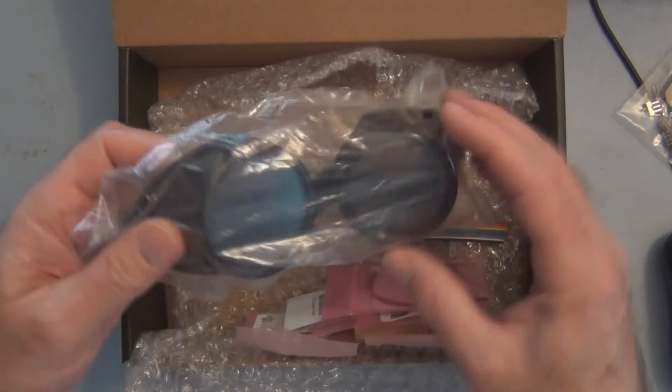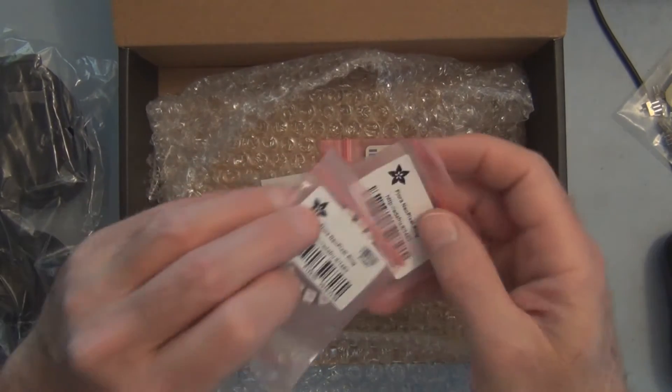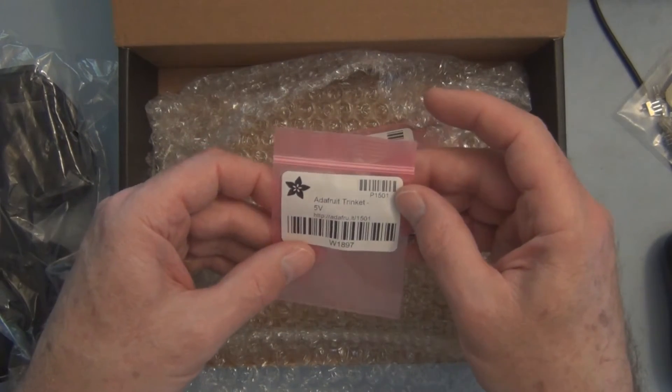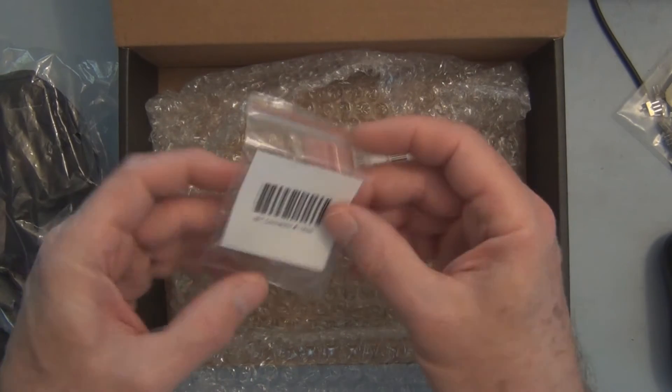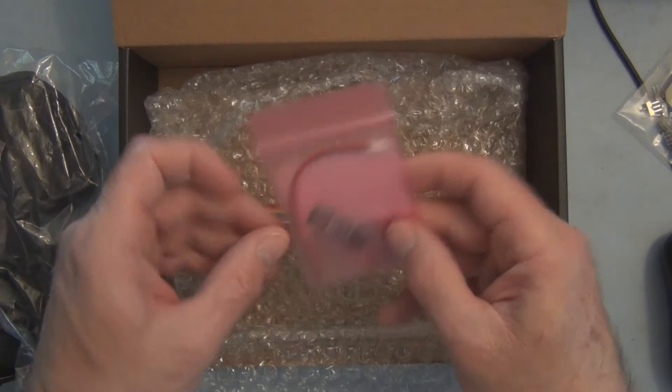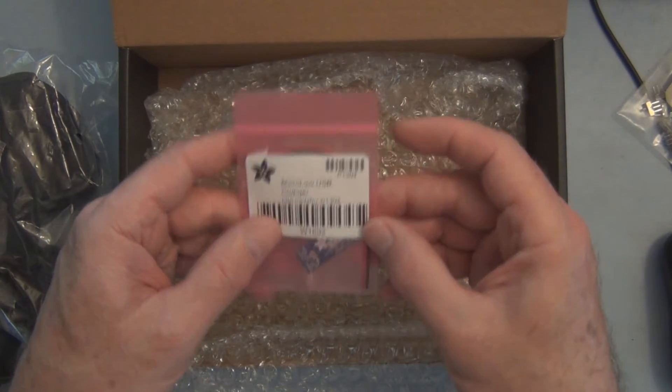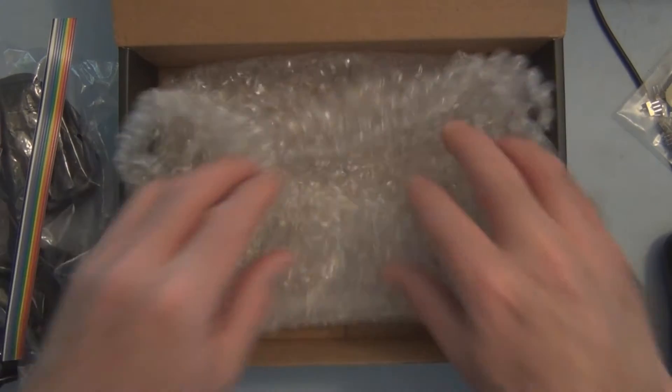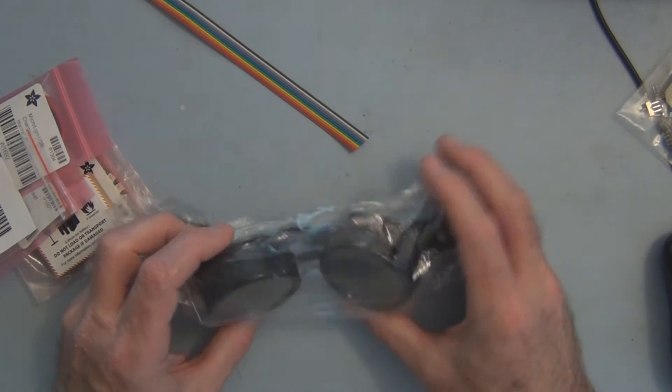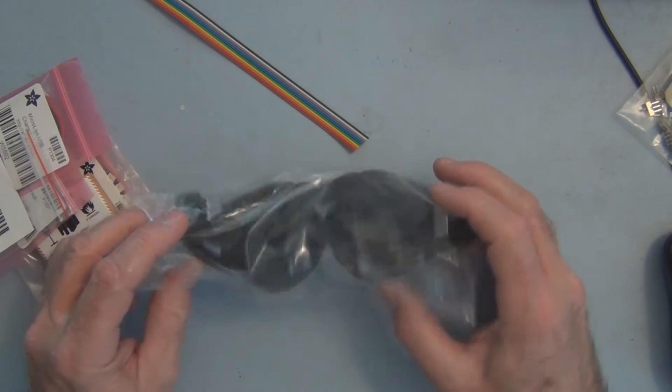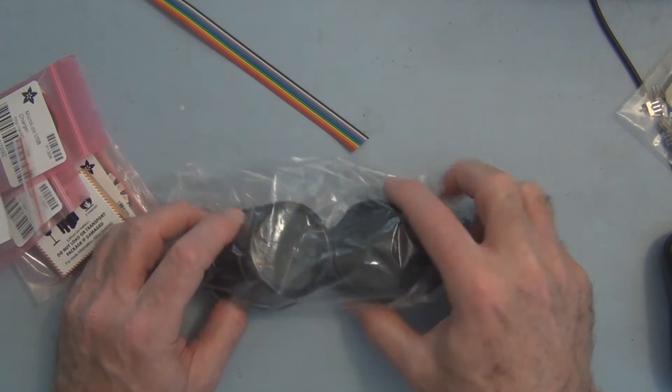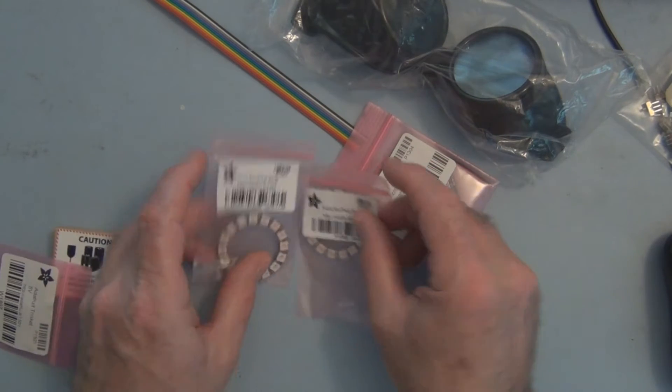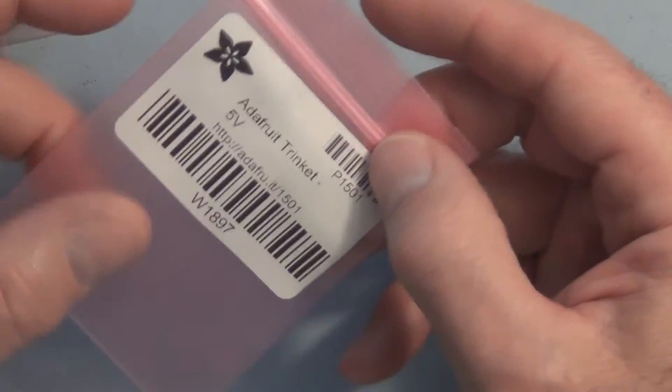This kit here from Adafruit's got everything you need: the goggles, two Neo pixel rings, battery, the Adafruit trinket 5-volt, JST connector, a micro lipo USB charger, and some cable. This is more of a decorative prop, special effects visual prop that you want to wear but not over your eyes. Not a good idea to have these Neo pixels which are pretty bright over your eyes.